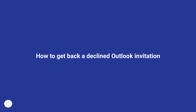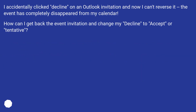How to get back a declined Outlook invitation. I accidentally clicked Decline on an Outlook invitation and now I can't reverse it. The event just completely disappeared from my calendar. How can I get back the event invitation and change my decline to Accept or Tentative?